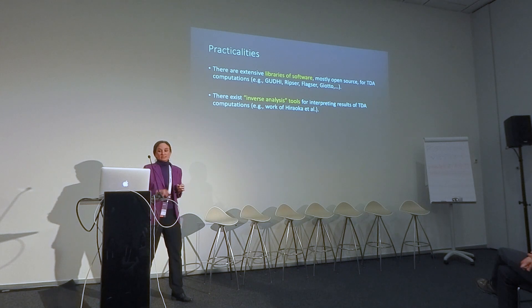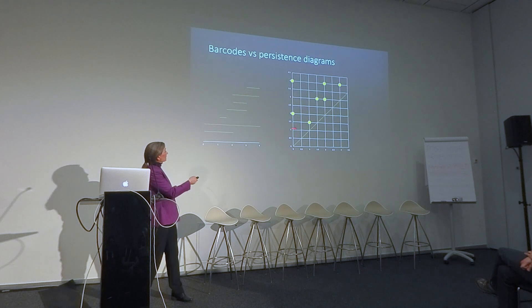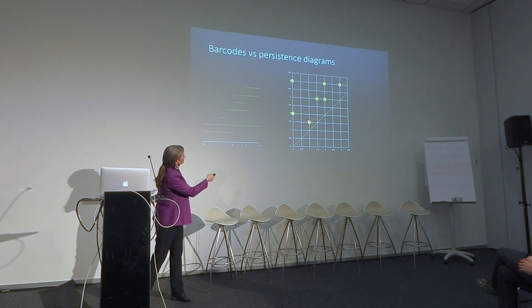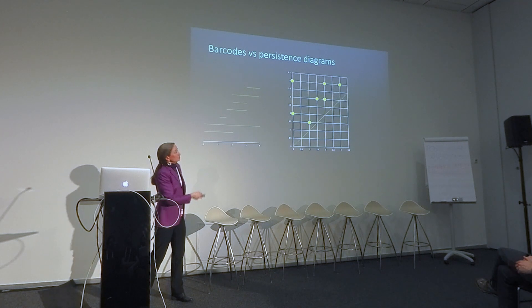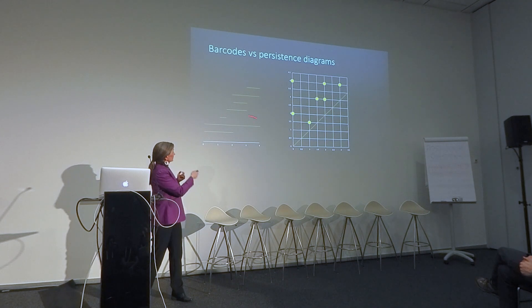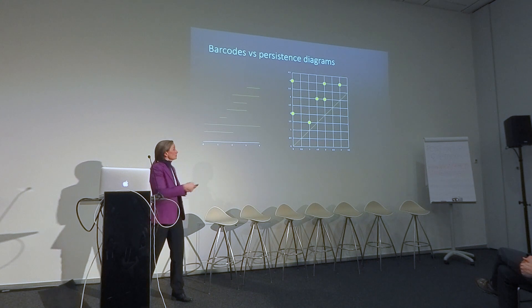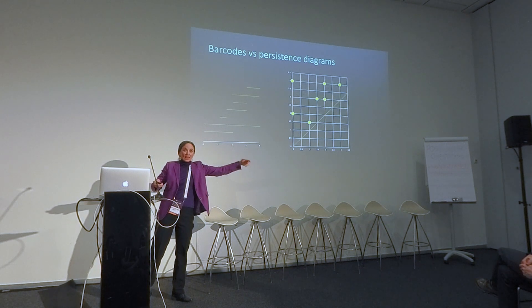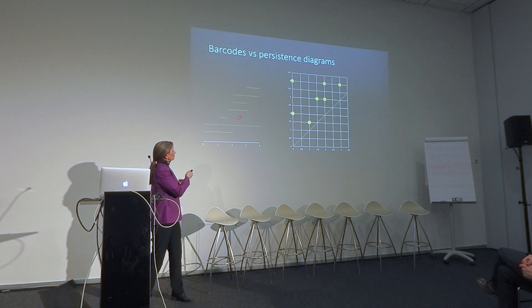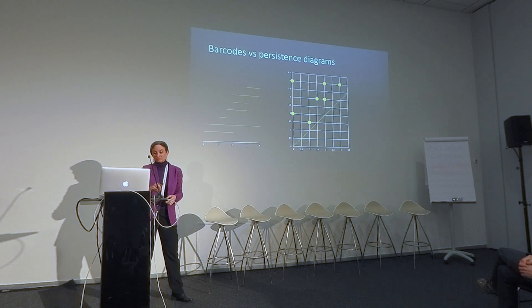One point I'd like to make briefly: if you think about the points that are close to the diagonal in the persistence diagram, those correspond to very short bars. People often think of these points close to diagonal or short bars as being sort of noise — they're noisy features that are not persistent. You're interested in what topological features actually persist over a long time. That's usually a good approach, but one needs to be careful because it can happen that a small bar or a point close to the diagonal could actually encode important information.